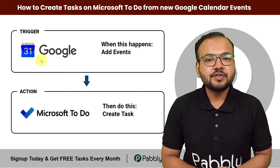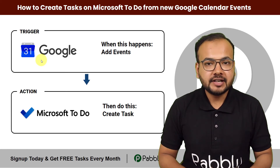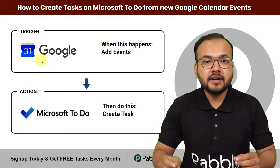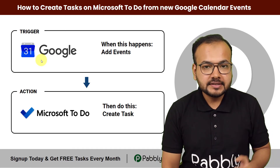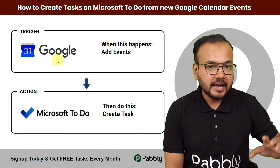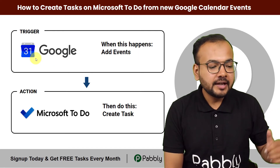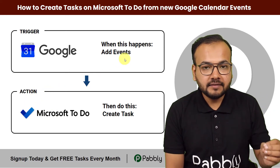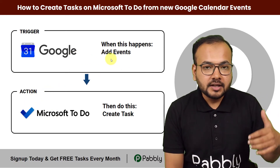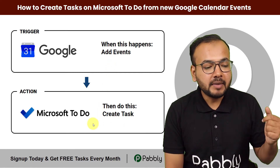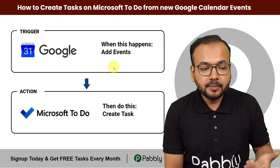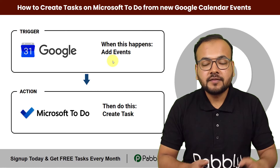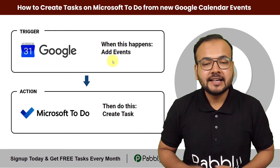In this video you will learn how you can create tasks in Microsoft To Do automatically just by adding a new event in your Google Calendar. We are connecting Google Calendar as the trigger application and Microsoft To Do as the action application. We are going to make this happen with Pabbly Connect, an integration and automation tool, and you can set up this automation without any coding.